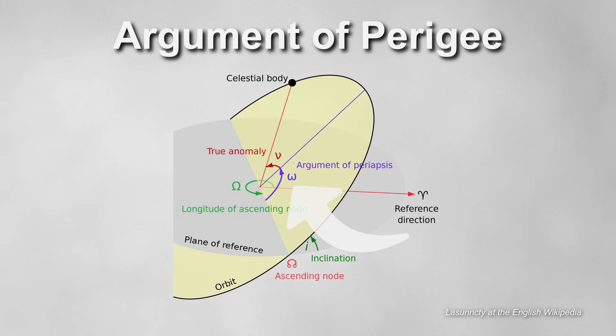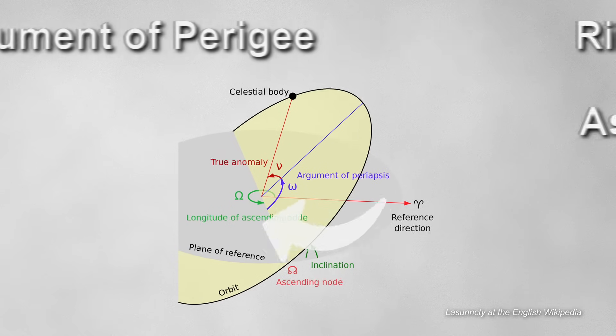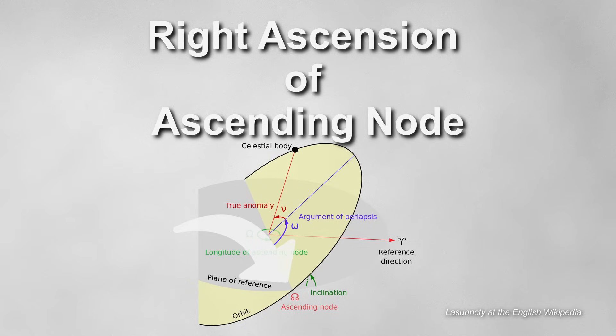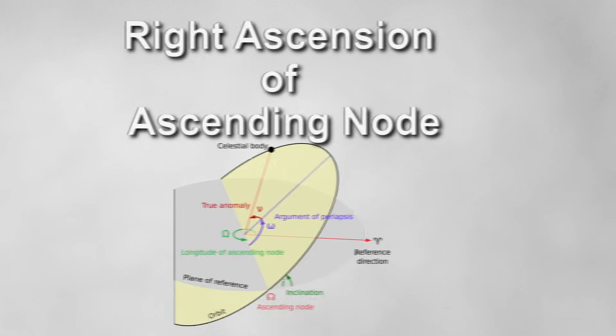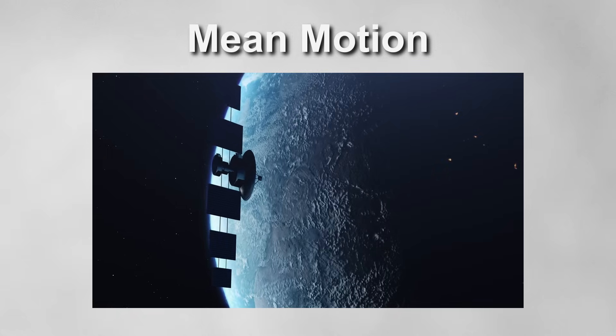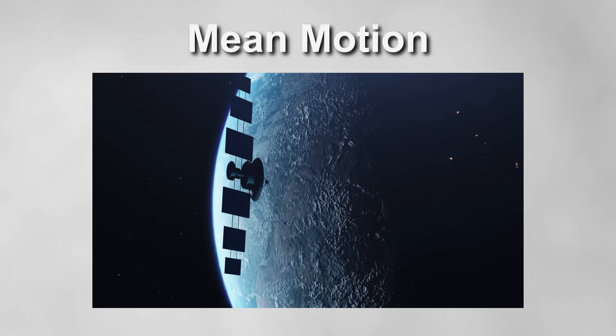The argument of perigee is the angle between the ascending node, the point where the reference plane intersects the satellite's orbital path, and the point of the closest approach to Earth in a satellite's orbit. There's also the right ascension of ascending node, which is the angle between the reference direction and the ascending node of the orbit, and finally, the mean motion, which indicates the amount of time the satellite has been in orbit.